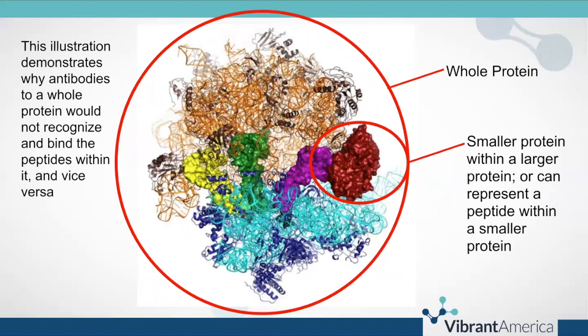This big, large, globular, multicolored shape would be an example of a whole protein — like cow's milk protein. A smaller protein within the larger one, say the red one, might be beta casein. Antibodies to whole cow's milk protein would not bind to beta casein; the shape would obviously not be the same. This concept also applies at finer levels of magnification: beta casein could be the large protein, and the red smaller shape might represent a peptide within beta casein.